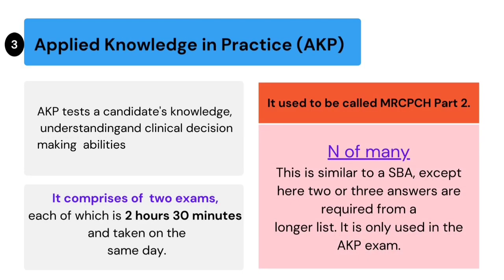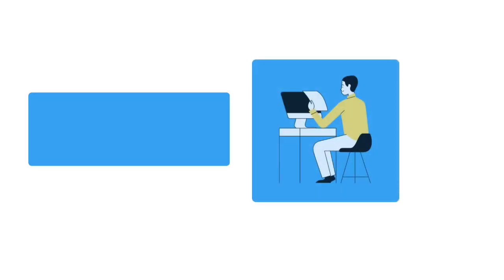The third theoretical paper is Applied Knowledge in Practice (AKP). AKP tests the candidate's knowledge, understanding, and clinical decision-making abilities. It comprises 2 exams, each of 2 hours and 30 minutes, taken on the same day. It used to be called the MRCPCH Part 2. One type of question in AKP is 'N of the many,' which is similar to Single Best Answer, except here 2 or 3 answers are required from a longer list.